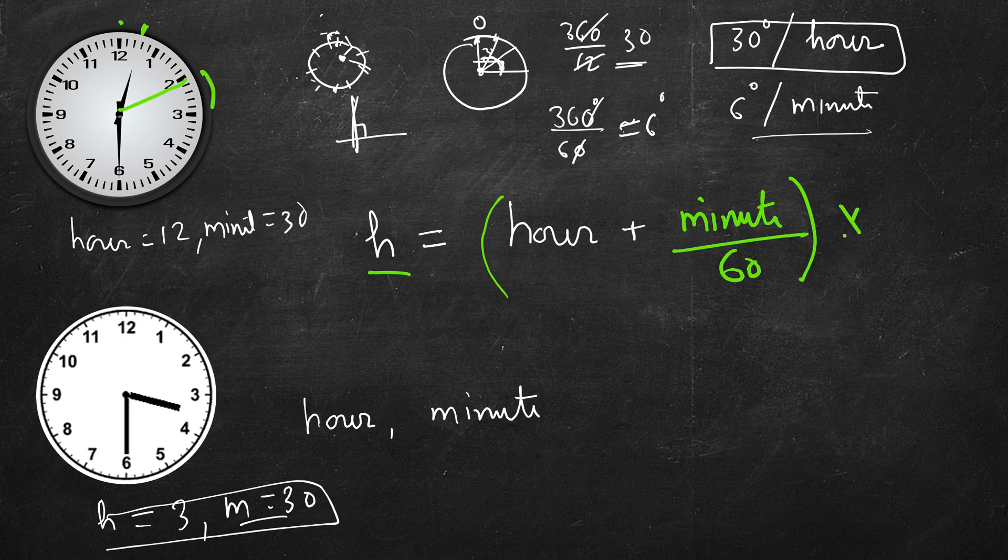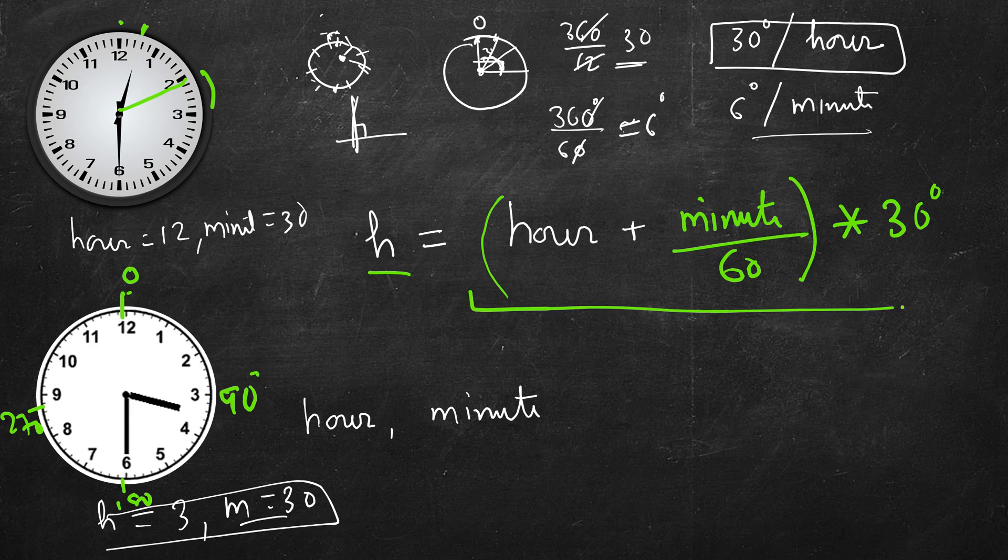And if we multiply it by 30, we get where is this hour hand. So we will start from this is 0, this is 90, this is 180 degrees, 270 degrees and this is 360 or 0.